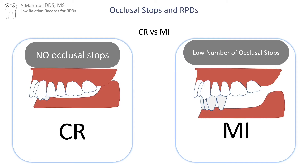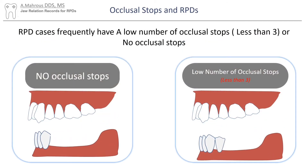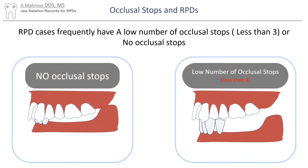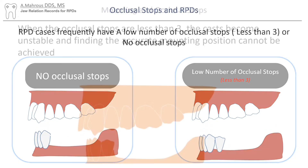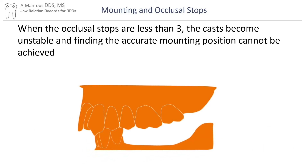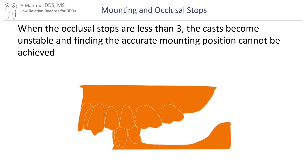In this lecture, we'll give you a simplified example of how to mount cases in MI and CR. Mounting a case in MI is usually straightforward. However, if a patient has less than three occlusal stops, this becomes a problem. The reason is that when occlusal stops are less than three, the cast becomes unstable, and finding an accurate mounting position is hard to achieve.